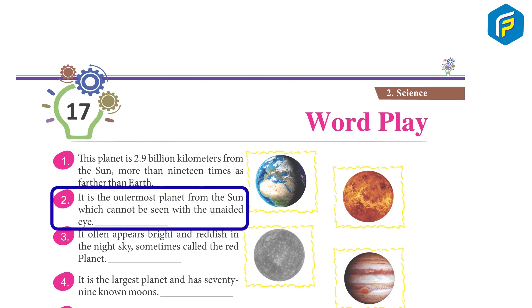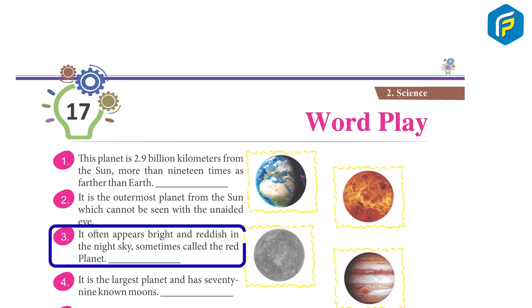2. It is the outermost planet from the Sun, which cannot be seen with the unaided eye. Neptune. 3. It often appears bright and reddish in the night sky, sometimes called the red planet. Mars.